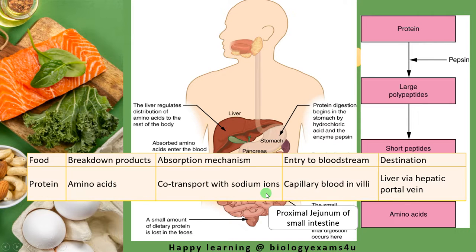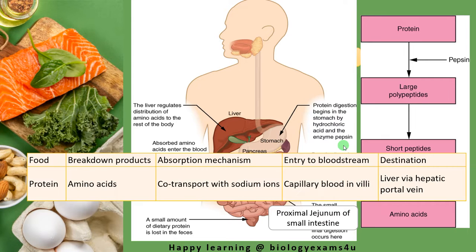Regarding the transport and absorption of protein: proteins are broken down into their building blocks called amino acids, which is the absorbable form. The absorption mechanism is by co-transport with sodium ions, just like carbohydrates. They enter the bloodstream via capillary blood in the villi, then travel to the liver via the hepatic portal vein, where amino acids are distributed to different parts of the body.